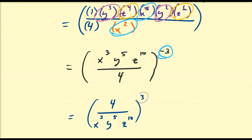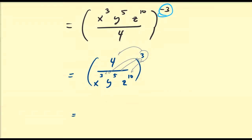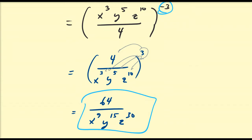And then I'm going to distribute this power of 3 to everything. So this is going to be equal to 4 cubed, which is 64, divided by x^3 cubed is x^9 — power to a power, you multiply. Then we have y^15 and z^30. And that's my final reduced answer. Remember, you can go in any direction; it depends on what you recognize first and what you want to take care of first.